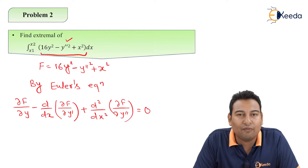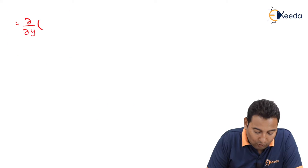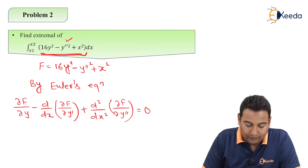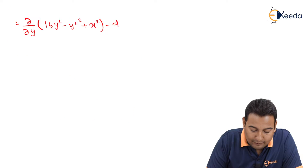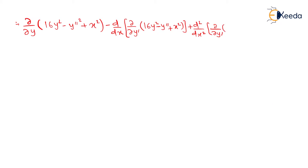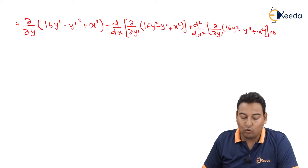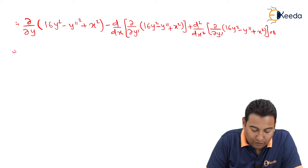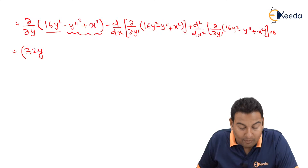By Euler's equation: ∂f/∂y minus d/dx of ∂f/∂y' plus d²/dx² of ∂f/∂y'' equals 0. Since y double-dash is the highest derivative, we go up to y double-dash. Let's put the value of f. So ∂/∂y of (16y² minus y''² plus x²) — differentiating with respect to y gives 32y. The y'' and x terms are constant with respect to y, so they give 0.